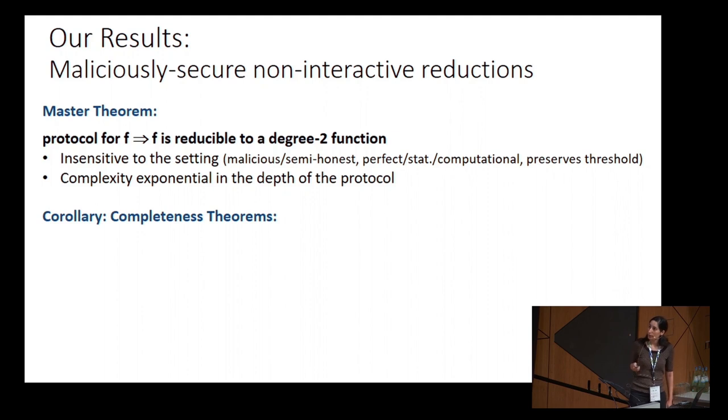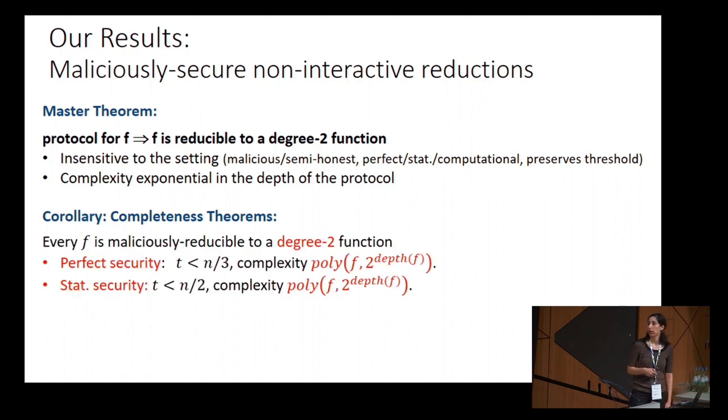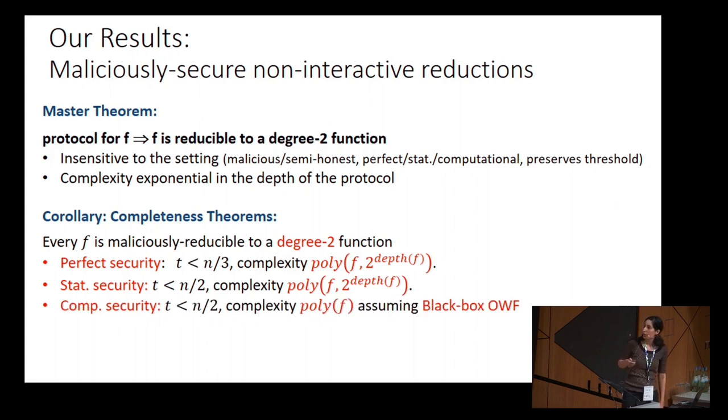You can plug in many protocols and apply the master theorem on them, and as a corollary you get reductions. We get the completeness theorem that says every function is maliciously reducible to a degree 2 function, and we can get it either in the information theoretic setting or in the computational setting. If we do so in the computational setting, then we can save the exponential growth.